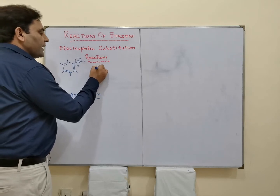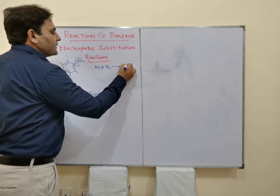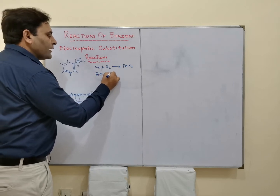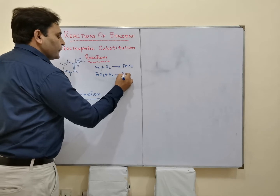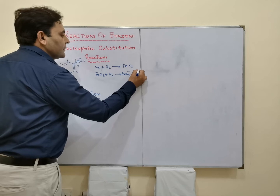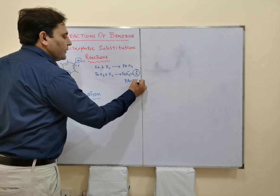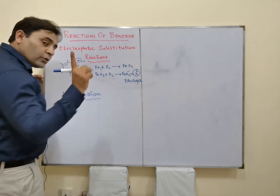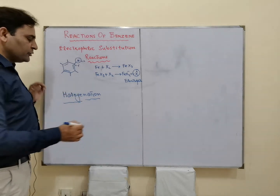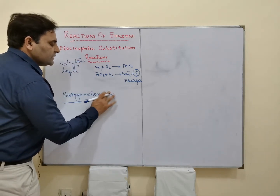In the previous reaction we have seen, FeX3 reacts with X2 giving FeX4 minus or X positive — this is our electrophile, a strong electrophile. This is what we are going to use in halogenation: the substitution of hydrogen by halogen.